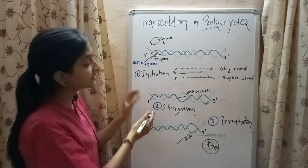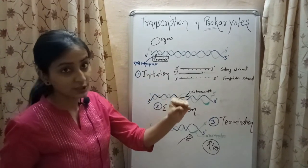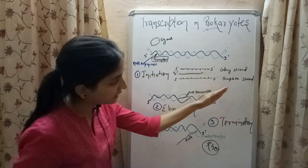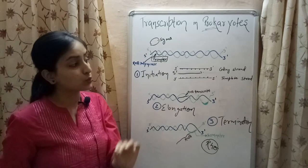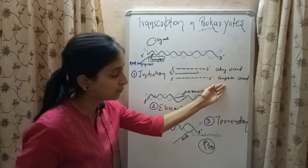In the elongation process, the RNA polymerase starts adding nucleotides in 5' to 3' direction containing sequences which are complementary to the template strand.